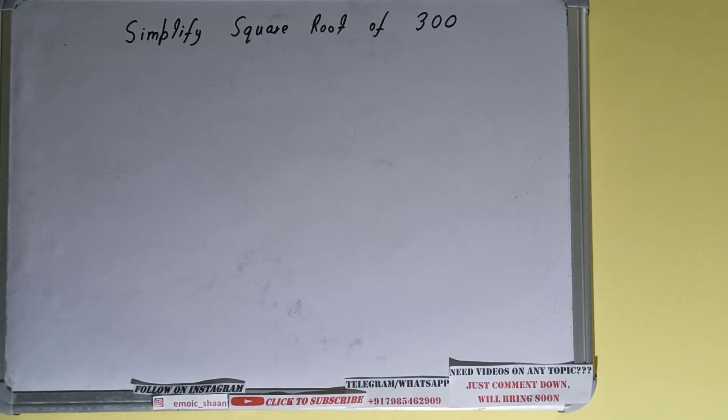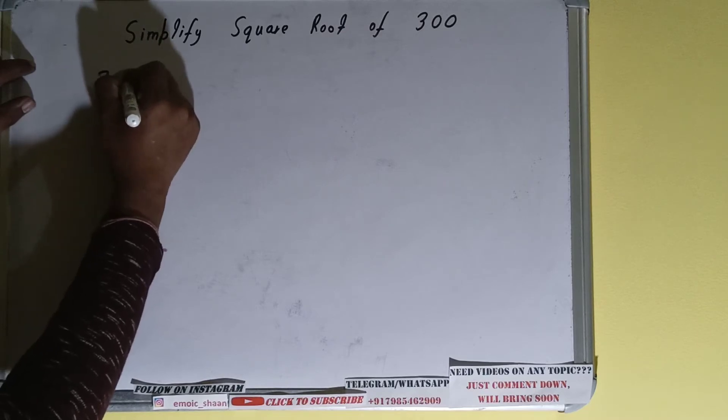Hello friends, in this video I'll be helping you with the simplified square root of 300. So let's start. To simplify it we first need to find its prime factors, so we need to write it like this.